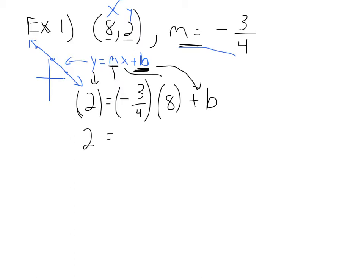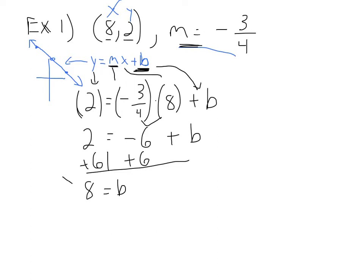So two equals negative three-fourths times eight, which gives you negative six, and then plus b. We need to solve for b. On the same side of b, you have a negative six. How do you undo it? You add six to both sides. So b is equal to eight. Put a big star by this because we are not done.